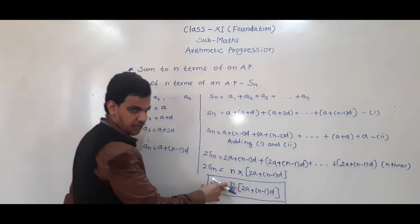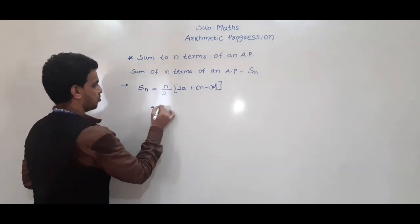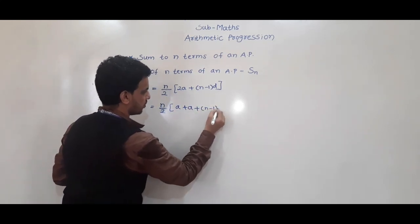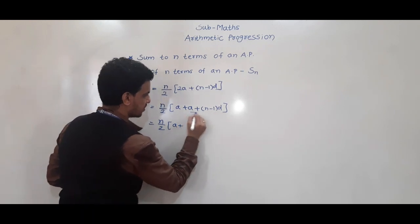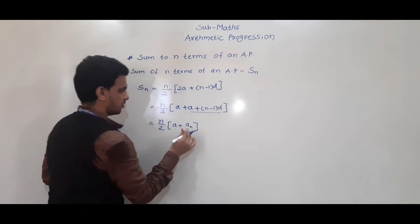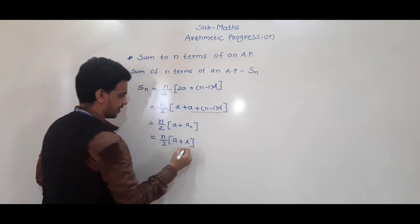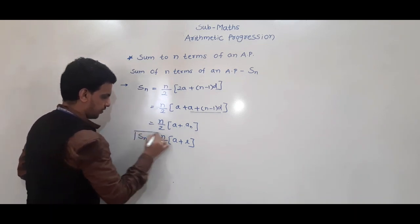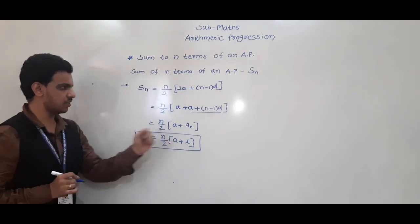Now we derive another formula using this one. We can write 2a as a + a, and a + (n−1)d is the last term, which we can denote as l or An. So Sn = n/2 × (a + l), where a is the first term and l is the last term.